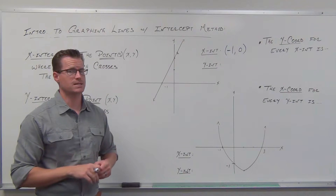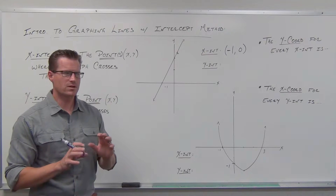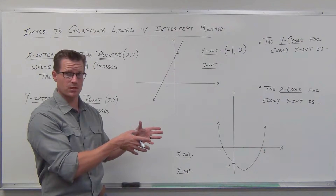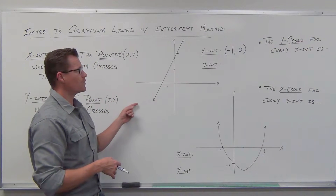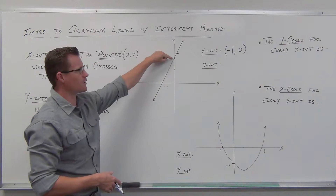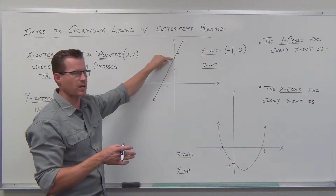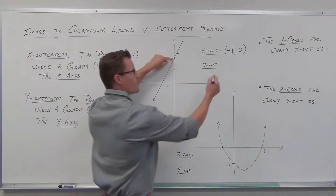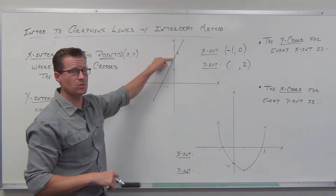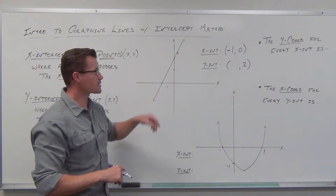Go ahead and find the y-intercept and write it down. Remember, the y-intercept is a point. We're looking at our line, looking at our y-axis, and asking: where does it touch? Well, where this line intersects the y-axis — that vertical axis — is right there. That's not just two; it's got to be an ordered pair. Notice how the y-coordinate is two. What's the x-part? The x-part is zero.